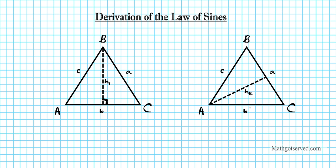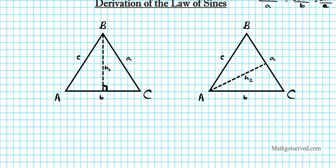Now let's set up some equations to derive the Law of Sines. The Law of Sines states: sin A over a equals sin B over b equals sin C over c. I have tutorials showing how to use this law to solve triangles. Note that the reciprocal of this entire equation is also the Law of Sines. This is the formula we desire to derive.